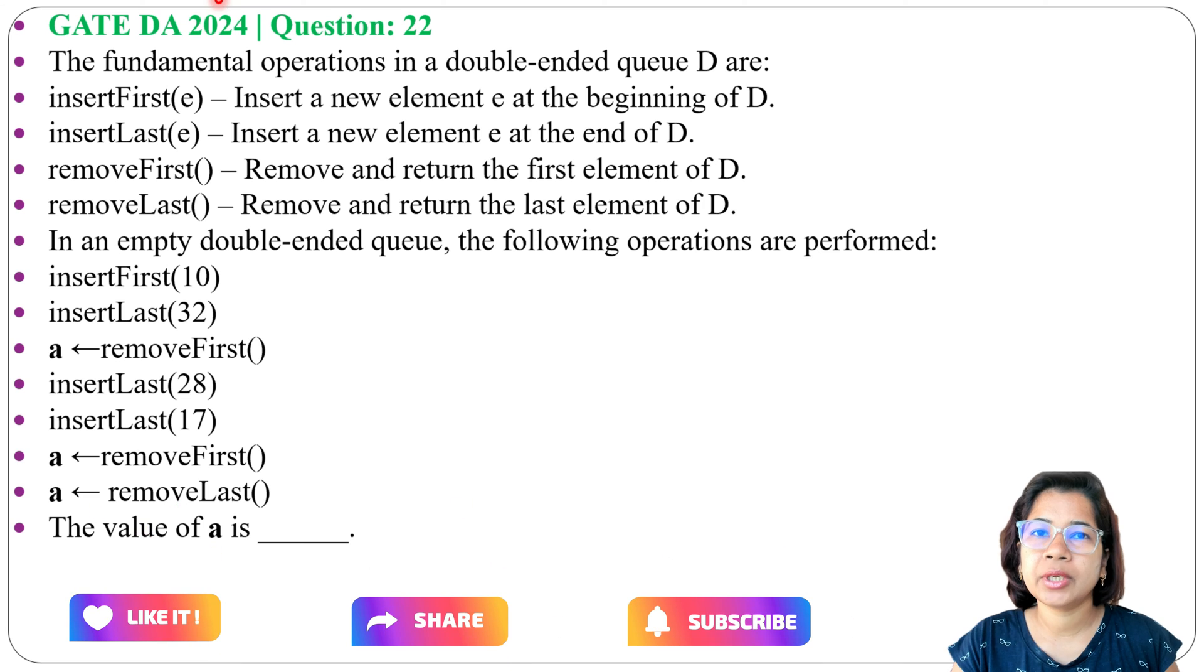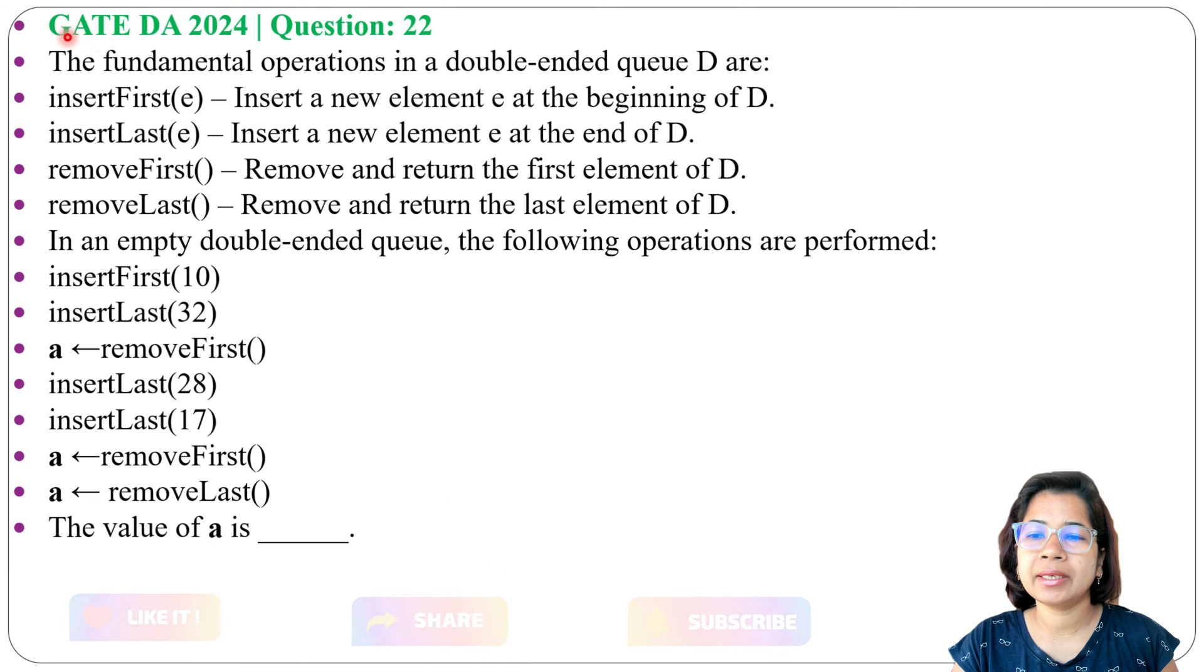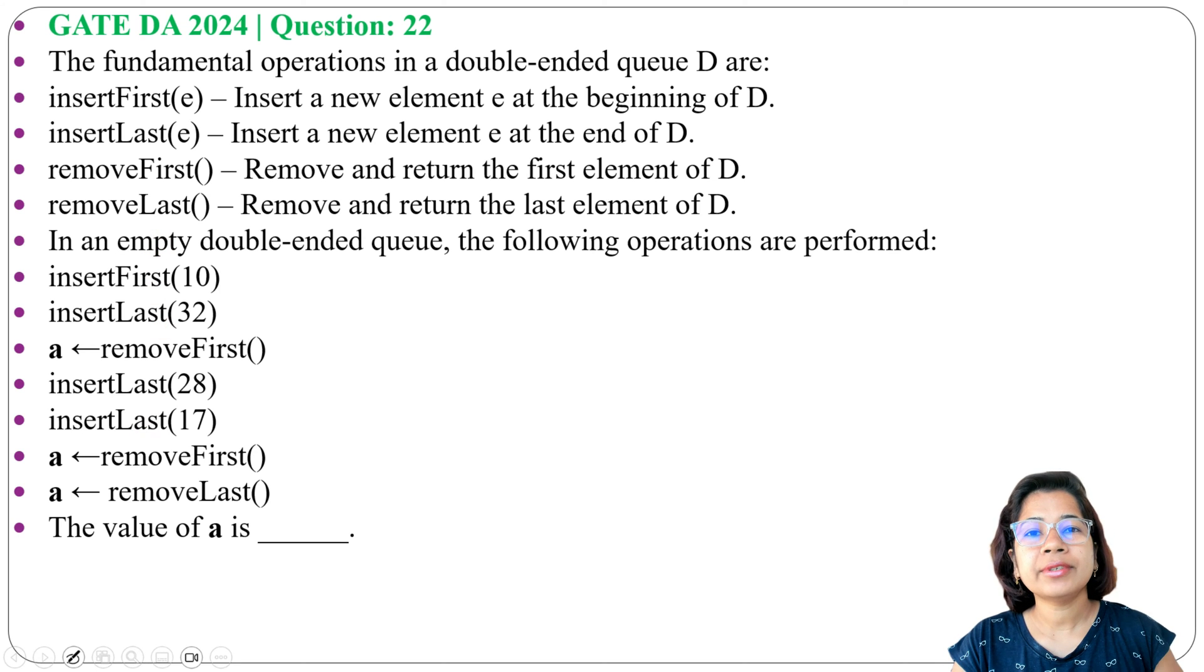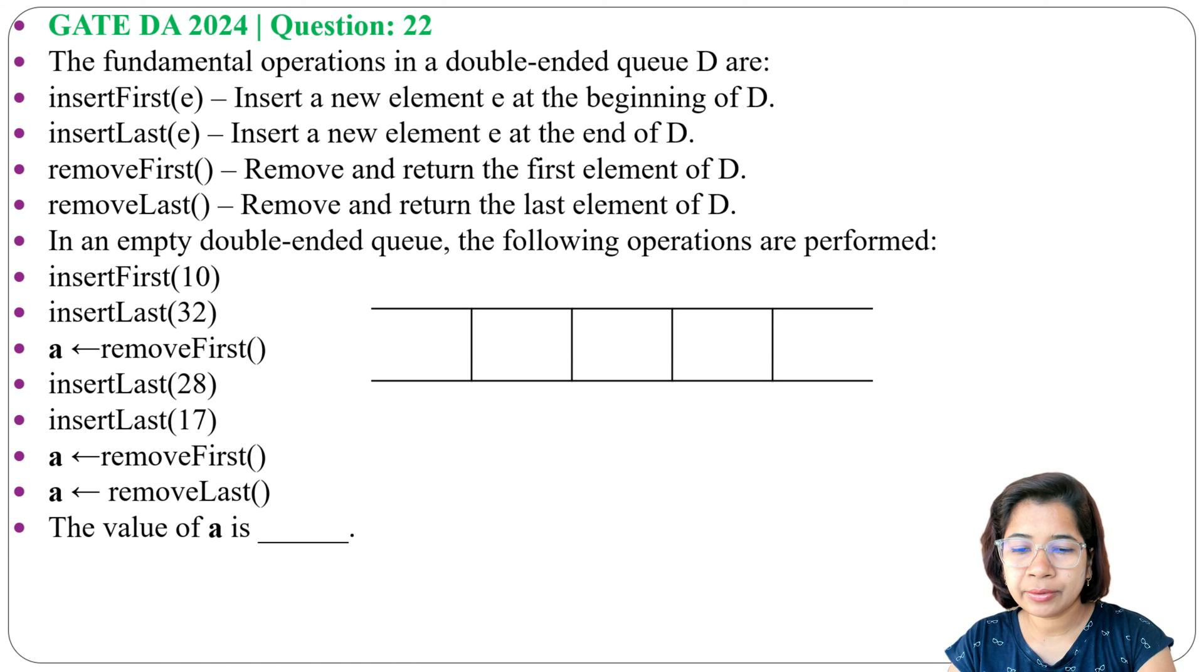Let's solve one previous question of queue. This question was asked in GATE DA 2024, question number 22. The fundamental operations in a double-ended queue D are given, and some operations are provided. Let me first create a double-ended queue. A double-ended queue means this queue has openings at both ends. This is the double-ended queue, this is our front, this is our last.